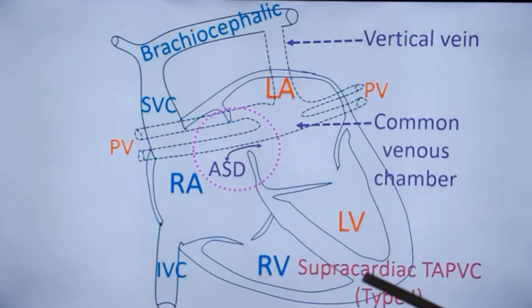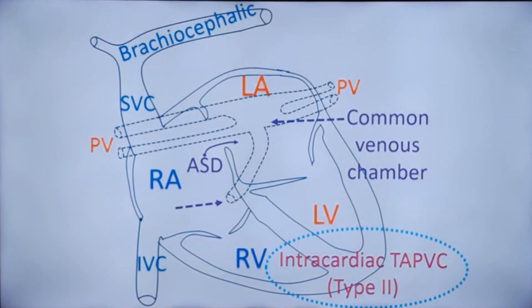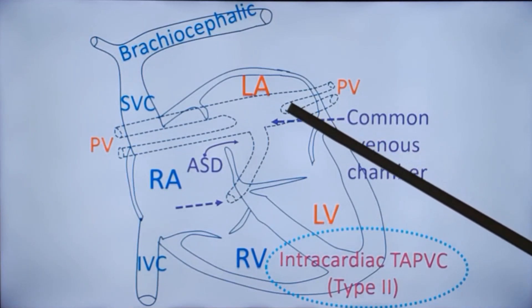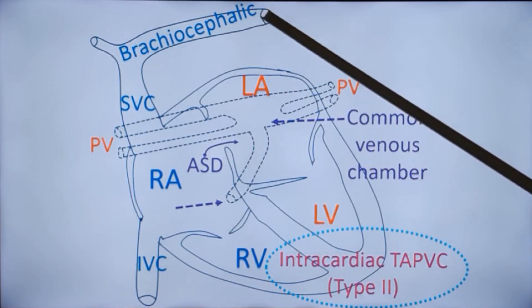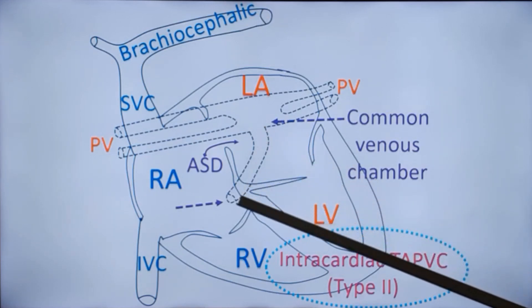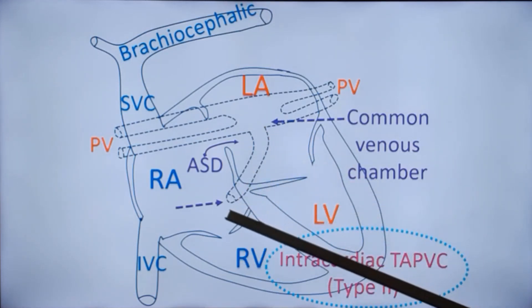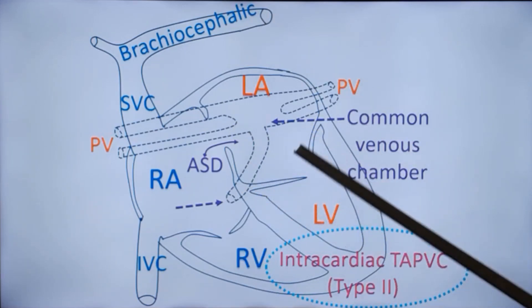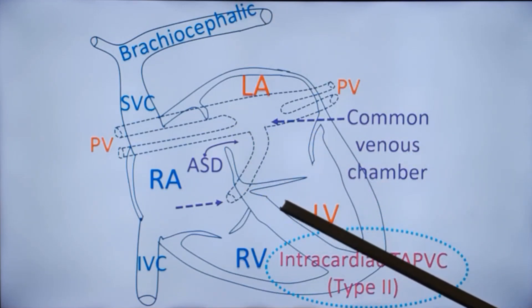In the second variety, known as Intracardiac TAPVC or type 2, the common venous chamber is there, but instead of draining upwards into the brachiocephalic, it drains downwards into the coronary sinus and hence into the right atrium. The ASD will be there because it is essential for survival.